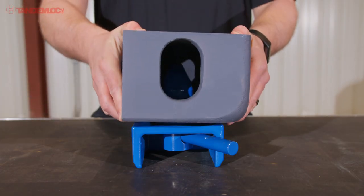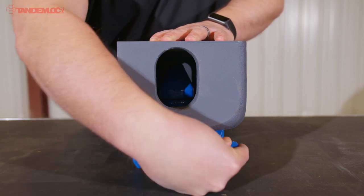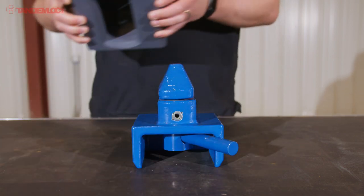After securing the fast mount to the deck, the container's corner fittings can be placed on the fast mount. Then by turning the handle on the fast mount, it will lock the container in place.